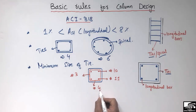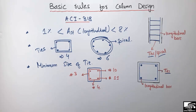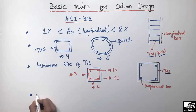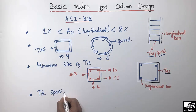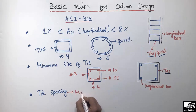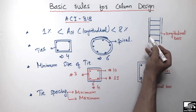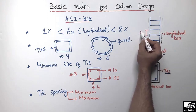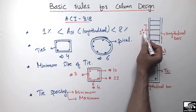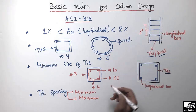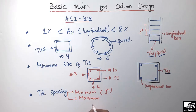The next important rule is the spacing of the tie — what should be the minimum spacing and what should be the maximum spacing. The minimum spacing between the ties should be one inch. This is very simple.